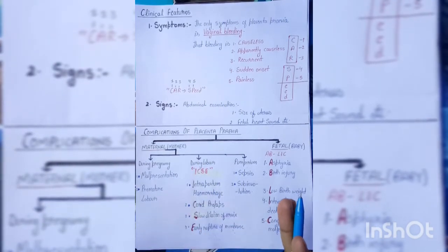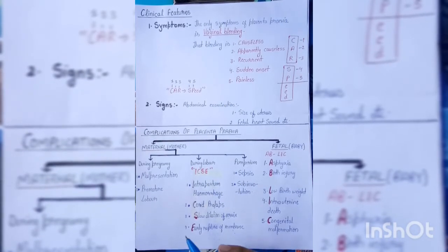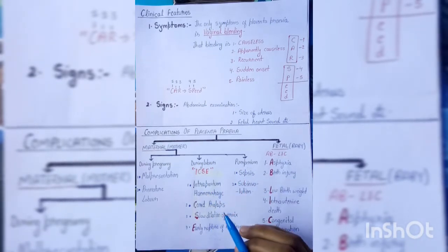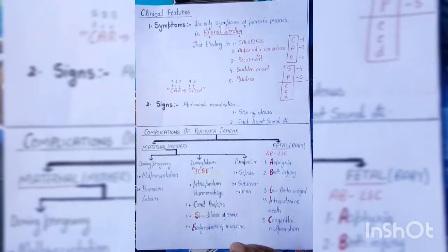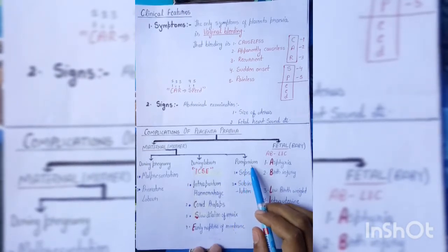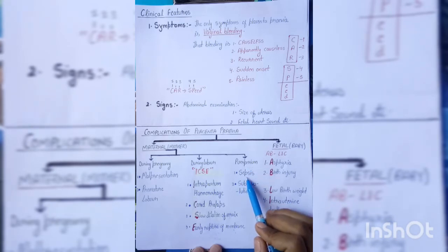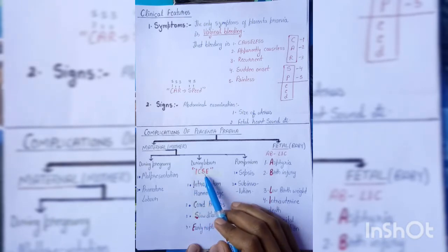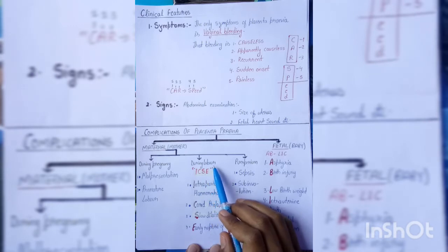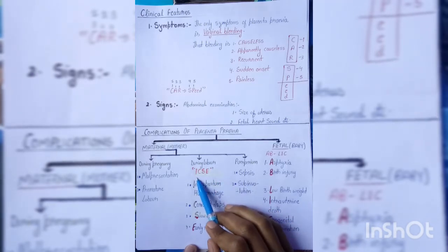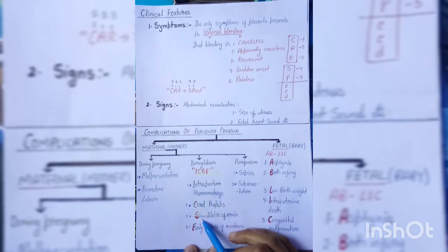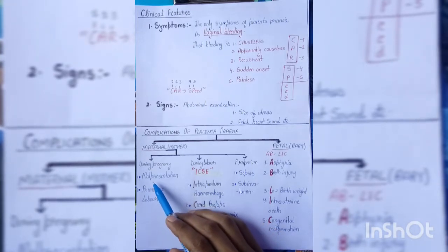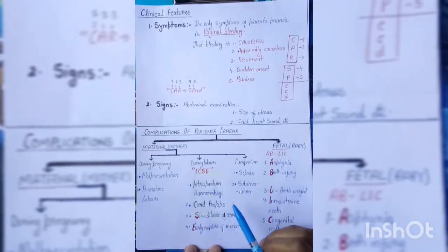Maternal complications occur in three stages. During pregnancy: malpresentation and premature labor. During labor: remember with mnemonic 'ICSC' — intrapartum hemorrhage, cord prolapse, slow dilation of cervix, and early rupture of membranes. During puerperium (the period after delivery when organs revert to original state): sepsis (bacterial blood infection) and sub-involution.